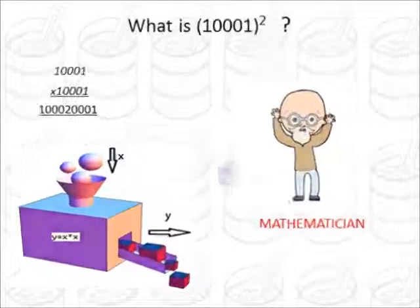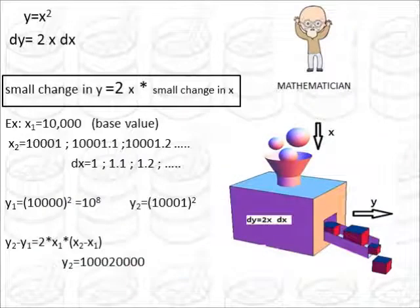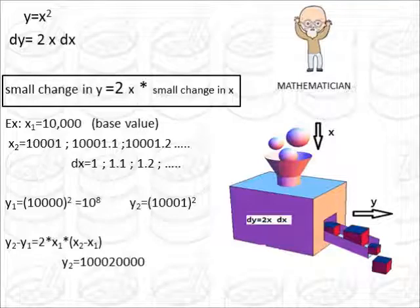And he makes this. Now this machine is based on a very simple principle from calculus. y equals x squared. Differentiate it. What we get? Small change in y equals 2x into small change in x. Now what he does, he takes 10,000 as our base value, and the values 10001, 10001.1, 10001.2 and so on as our secondary values. Then he calculates dx, that is 1, 1.1, 1.2 for each of these values.